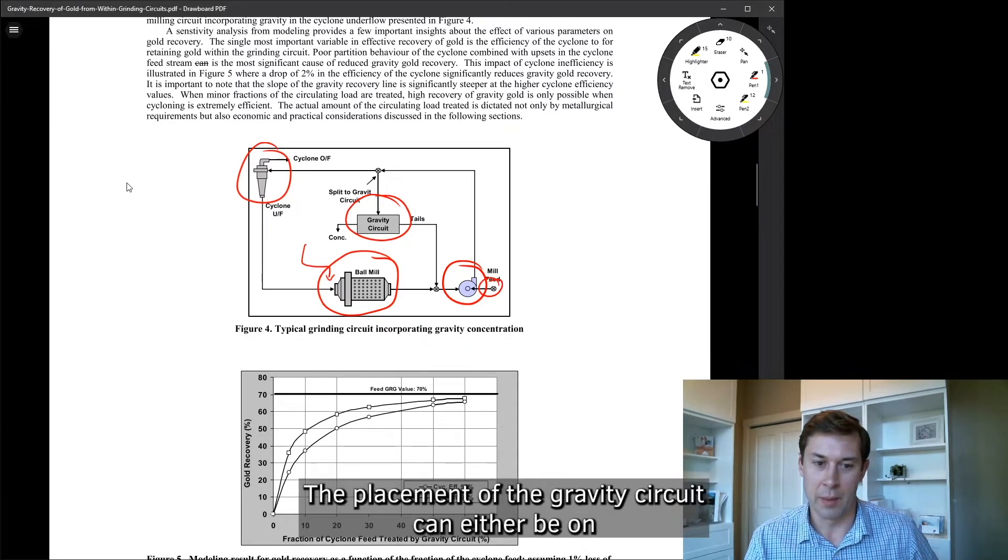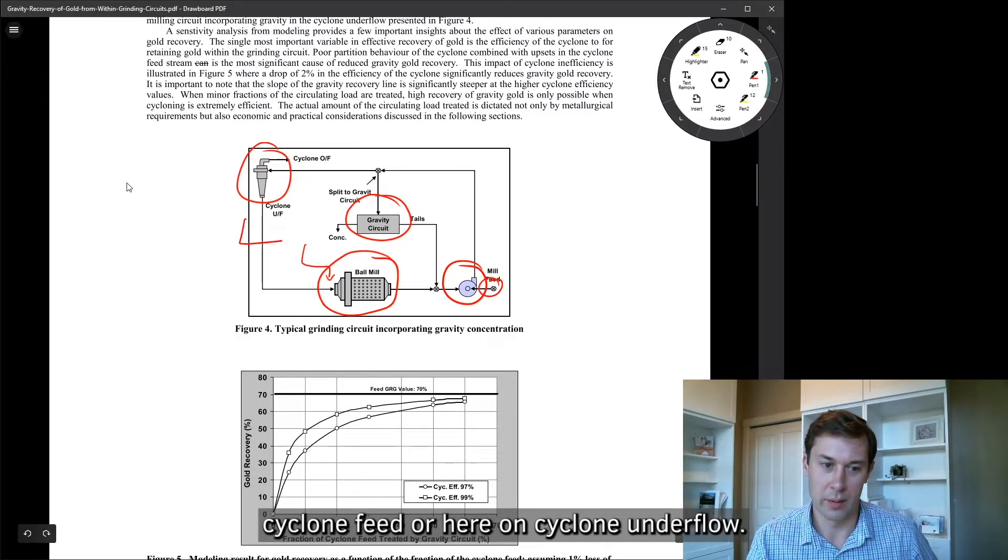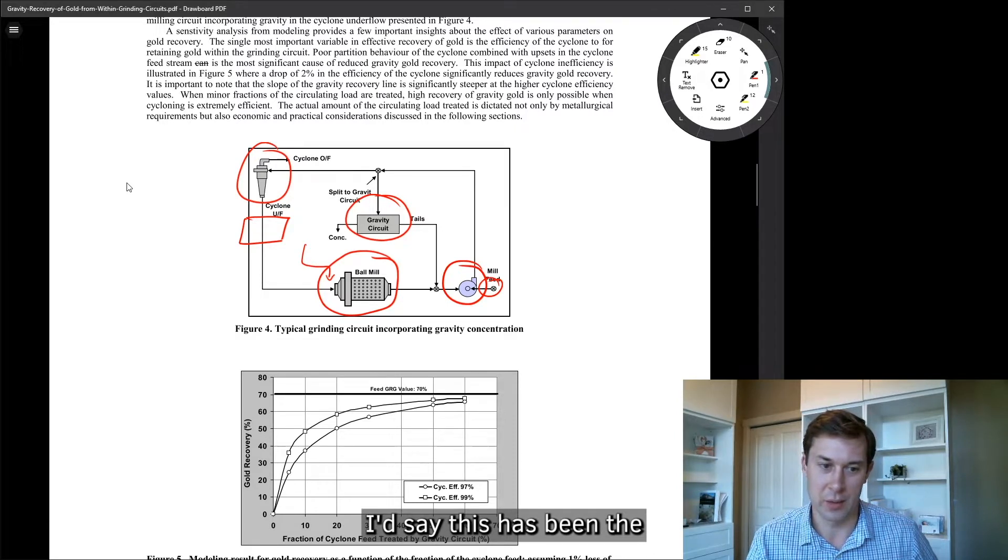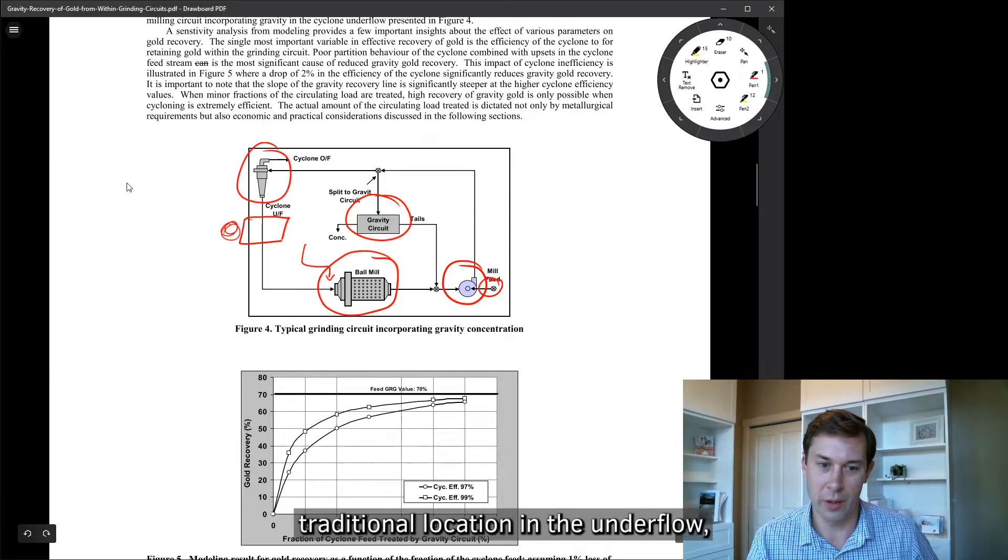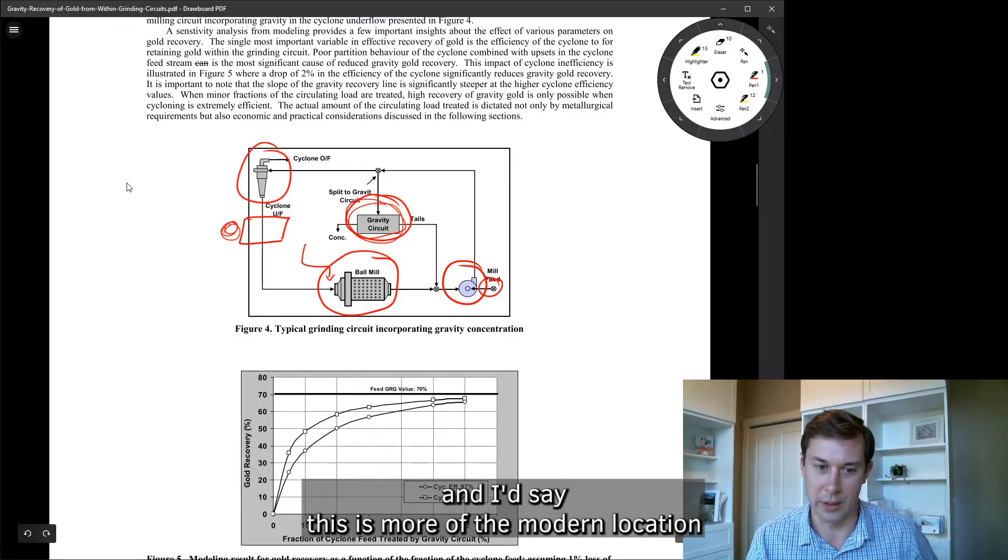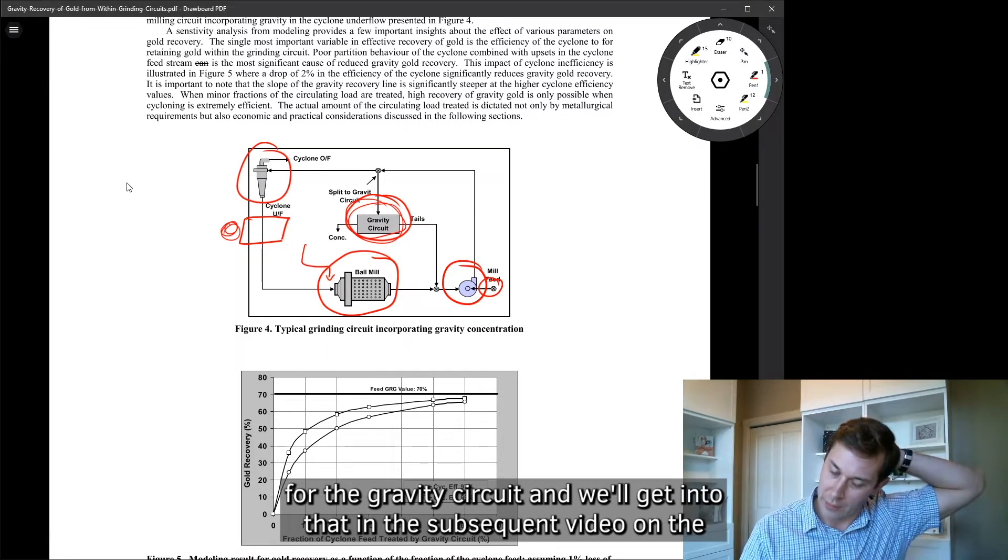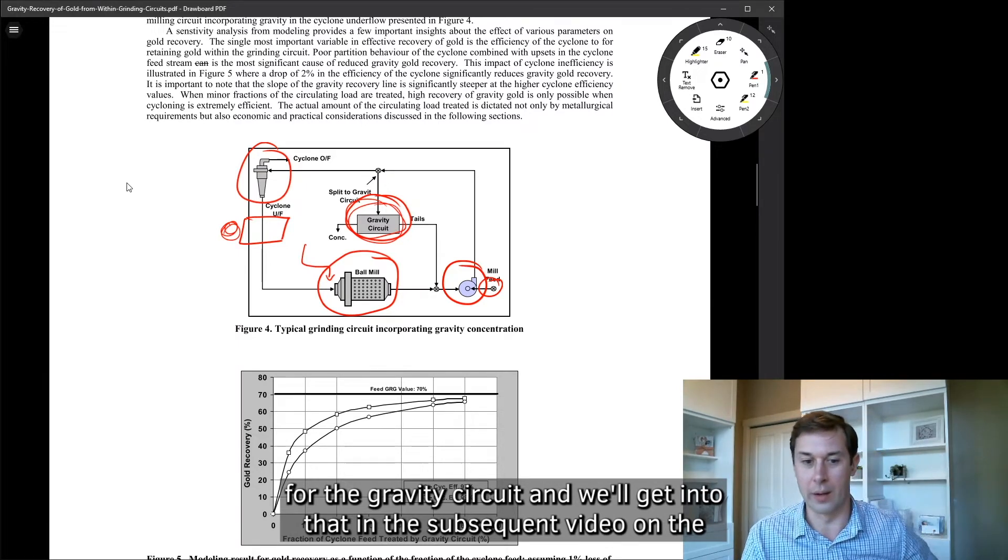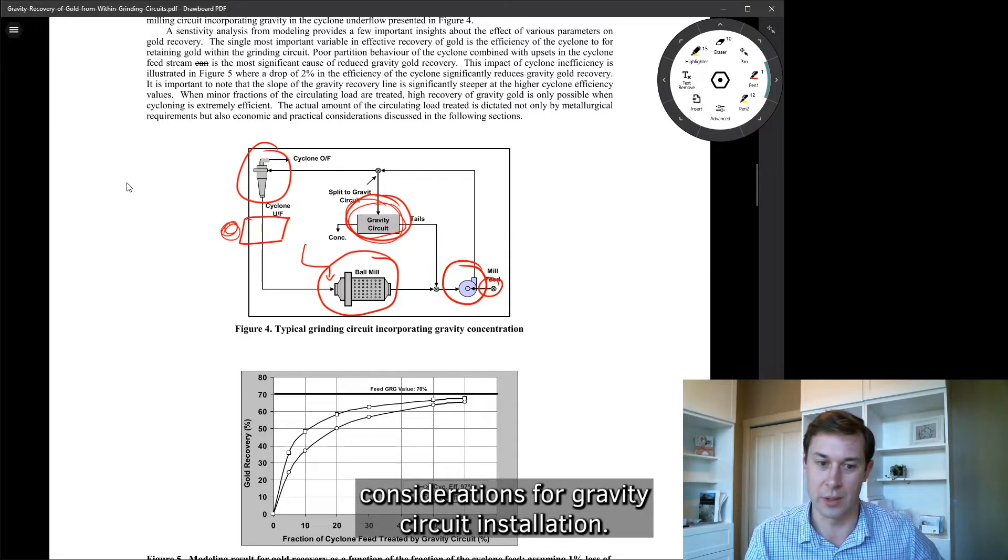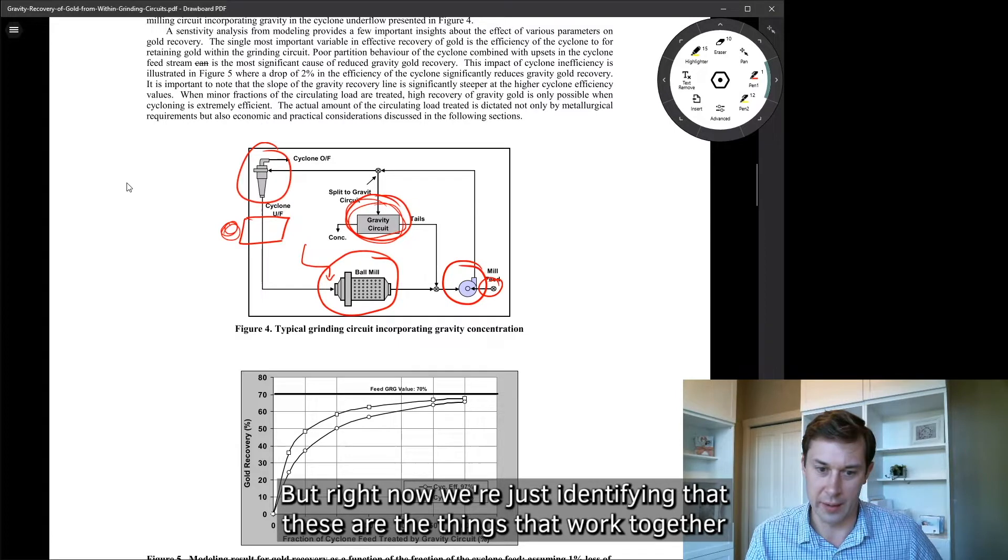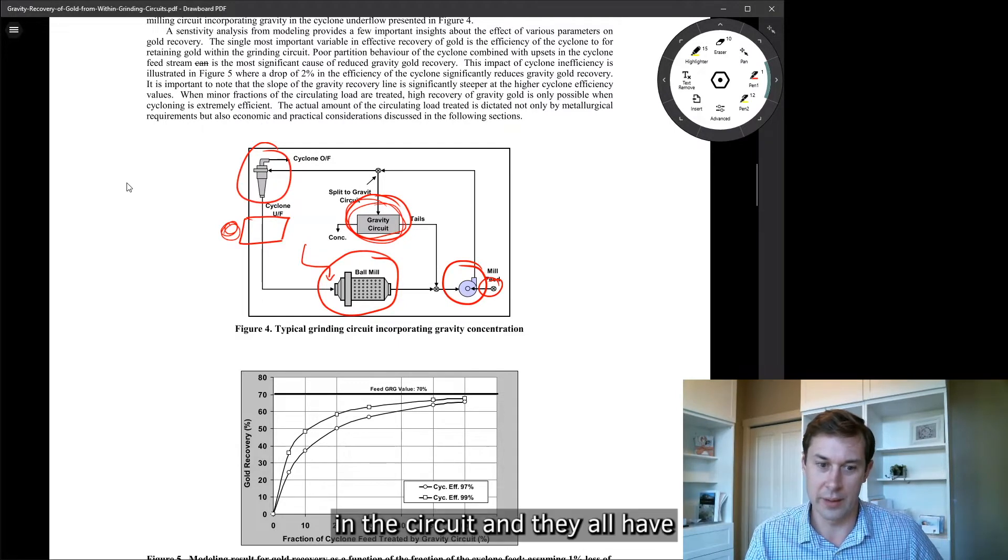We've got our cyclone for size separation. And then we've got our gravity circuit. The placement of the gravity circuit can either be on cyclone feed or here on cyclone underflow. I'd say this has been the traditional location in the underflow. And I'd say this is more of the modern location for the gravity circuit. And we'll get into that in the subsequent video on the considerations, the practical considerations for gravity circuit installation. But right now we're just identifying that these are the things that work together in the circuit and they all have an impact on gravity recovery.